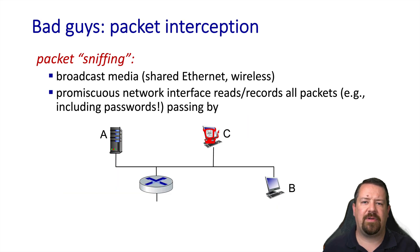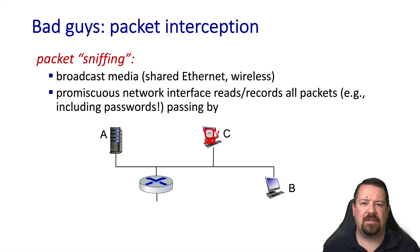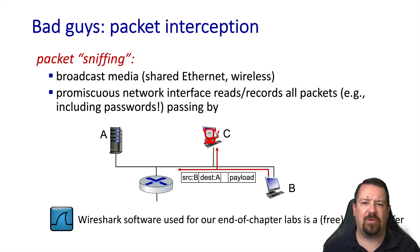A very different type of attack is packet sniffing. In this attack, the attacker is able to overhear and collect traffic that is not addressed to them. This is particularly effective in shared media such as older forms of wired ethernet and wireless ethernet even to today. In this example, host B is sending traffic to the destination A. However, because it's a shared media, compromised host C overhears this and records it. Packet sniffing software is widely available, and in one of the labs we'll be using Wireshark, which is an example of a packet sniffer.